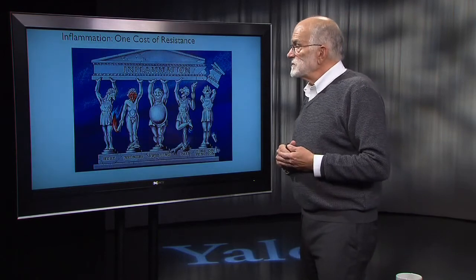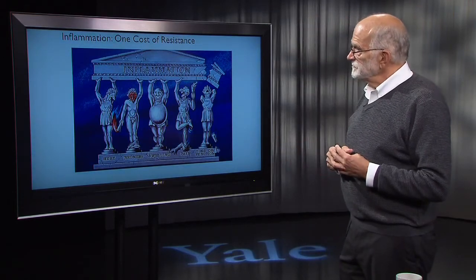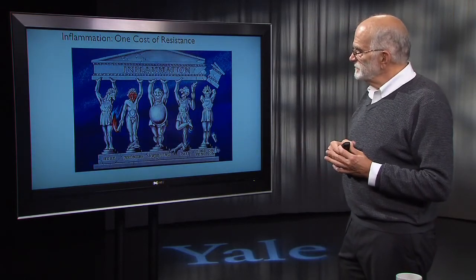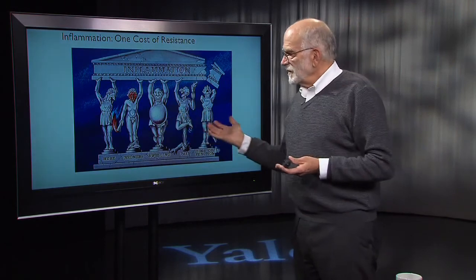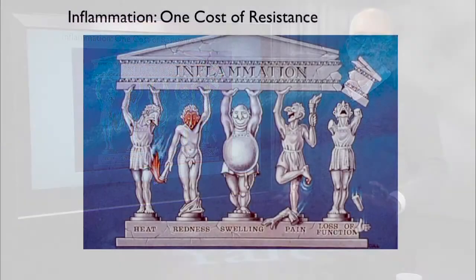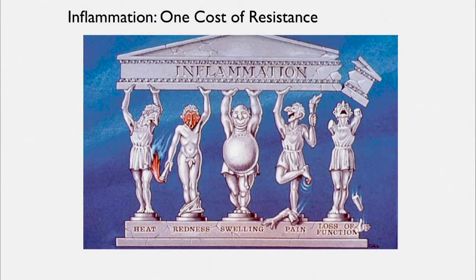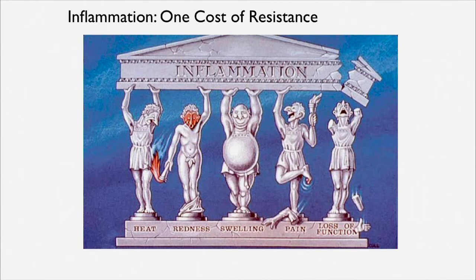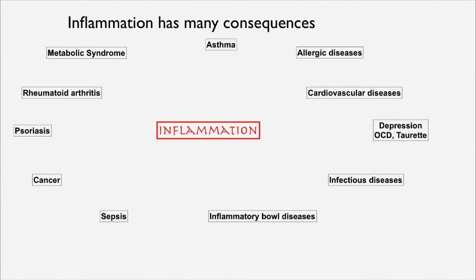One of the costs of resistance is inflammation. Here we have cartoon caryatids — the caryatids are the statues in the Parthenon that hold up the roof of one of the side temples. We have heat, redness, swelling, pain, and loss of function as the primary characteristics of inflammation. It's costly and it has a lot of consequences.